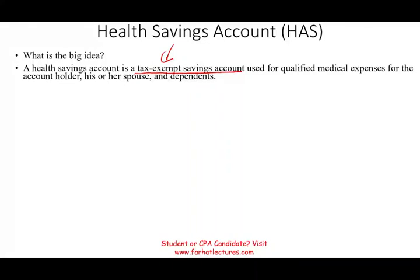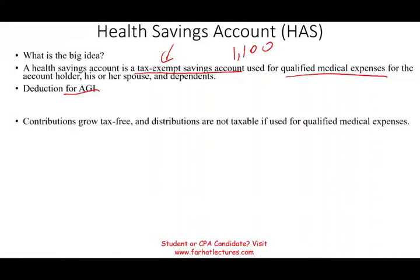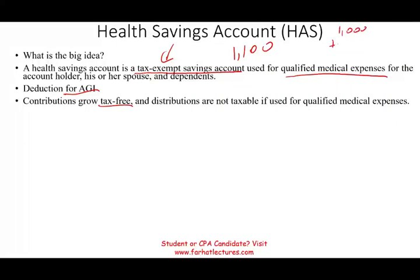Let's assume you put $1,000 away in that account — you've reduced your taxable income by $1,000. Now this $1,000, invested in this account, earned another $100, giving you $1,100. As long as you use this money for qualified medical expenses for yourself, your spouse, or your dependent, you have no taxes. It's a deduction for AGI. The contribution also grows tax-free, and the distribution is not taxable as long as it's for qualified medical expenses.